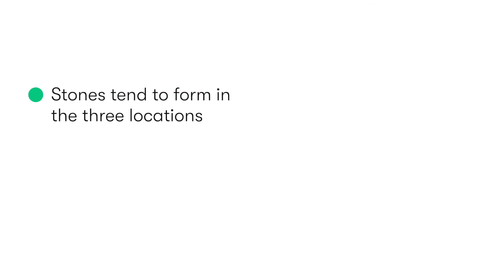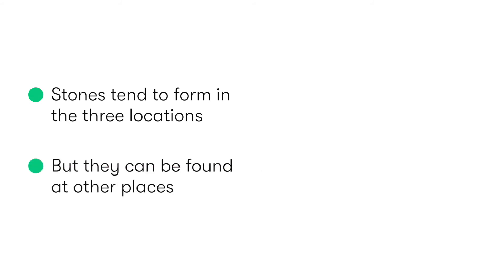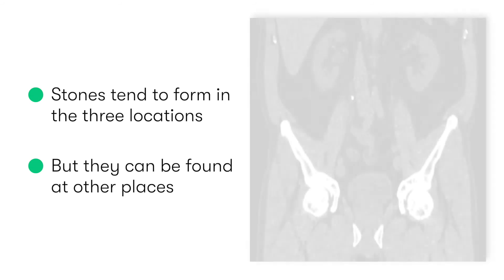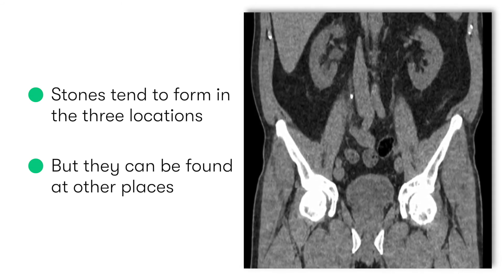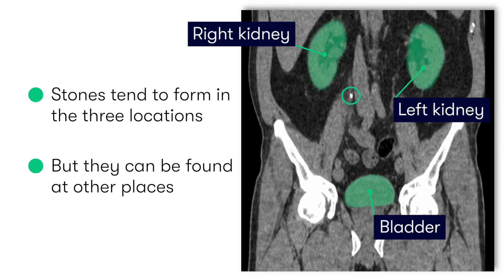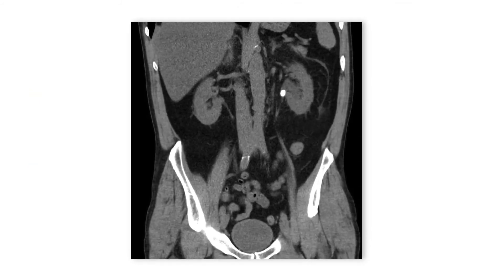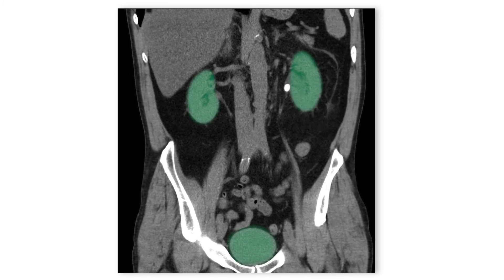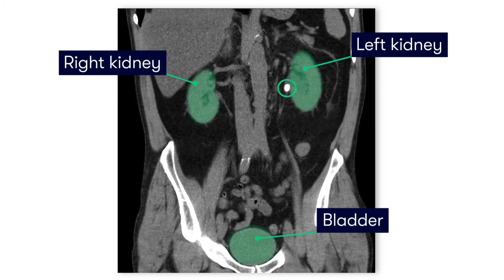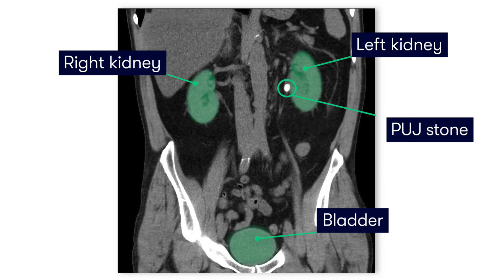There are three common locations along the urinary tract where we tend to find urinary tract calculi, though in some instances we do find stones in other locations. As we can see in this CTKUB, we can identify a calculus that's lodged in the proximal to mid ureter. In this CT scan, if we focus on the left kidney, we can see a sizeable and fairly obvious stone that's become lodged at the left pelvi-ureteric junction, or PUJ, which is one of the three common locations where urinary tract stones tend to become lodged.